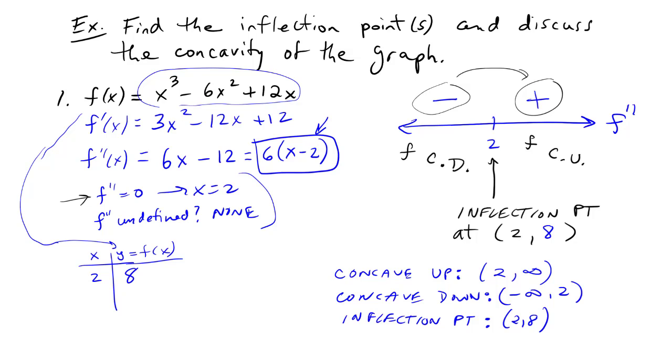Again, notice that the inflection point, that's a point. So that's the point (2, 8), whereas the others are intervals. And we have to know that from context there. So that's how we find the inflection points by checking concavity.